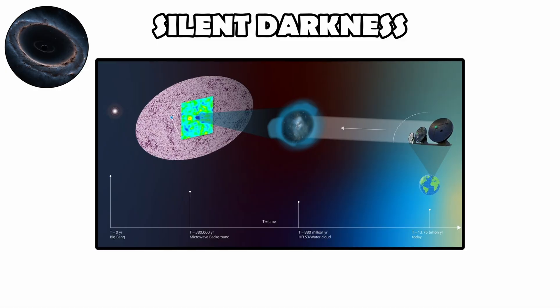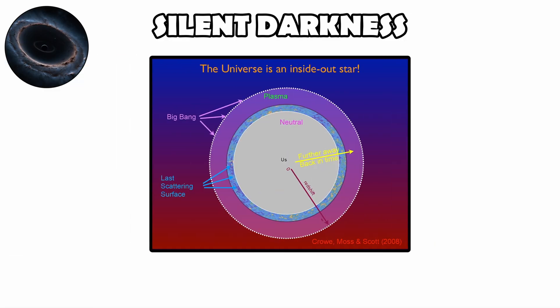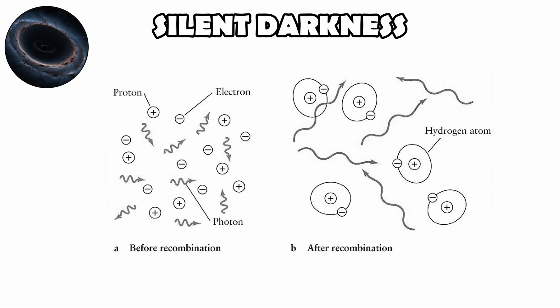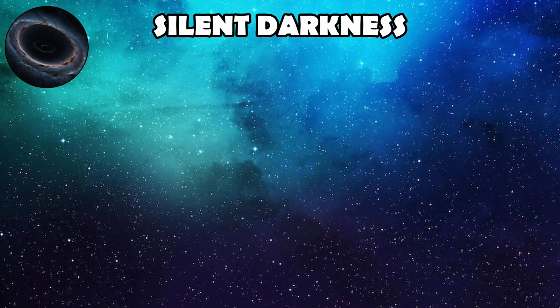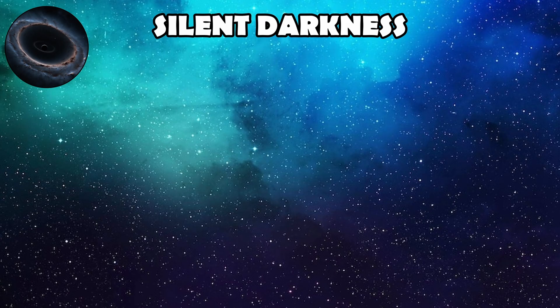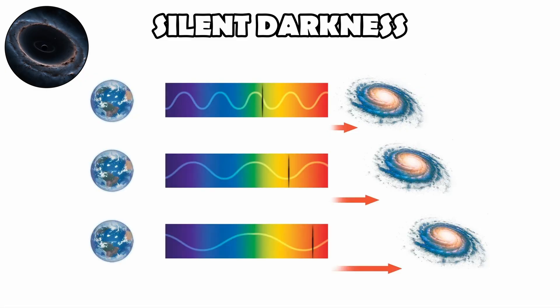For the first 380,000 years, the universe was opaque, like the inside of a star. Light could not escape in straight lines. It was trapped and diffused. When atoms finally formed and electrons bound to nuclei, photons were suddenly free to travel. That release of light is what we now see as the cosmic microwave background. It has been stretched into faint microwaves by 13.8 billion years of expansion, but it is still detectable in every direction.